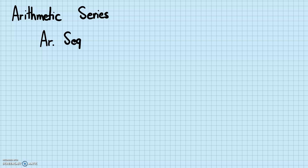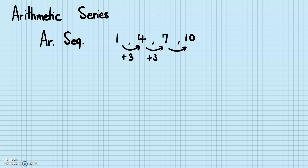So arithmetic sequence, just a reminder, is a sequence of numbers. For example, starting with 1, 4, 7, 10 — each succeeding term has a common difference, meaning we add the same number each time to get the next term. This is what an arithmetic sequence is.